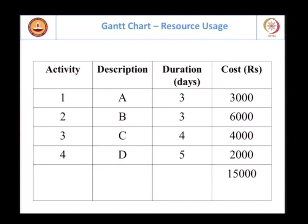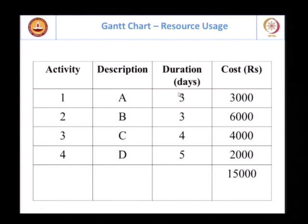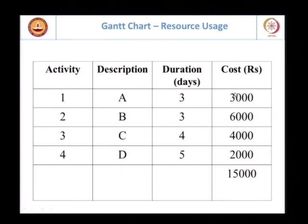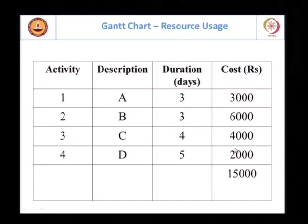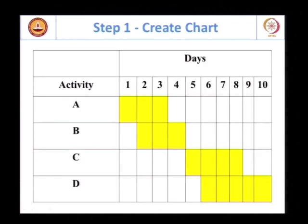Here is another way of improving the features of a bar chart. We have four activities — you can see four activities — with duration, and I am specifying the cost. There is a total cost associated with each of these activities. The activities have now been put in a bar chart in the following form.